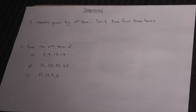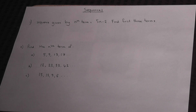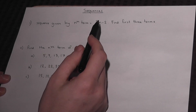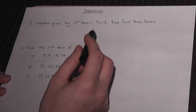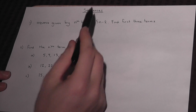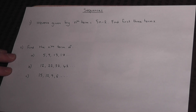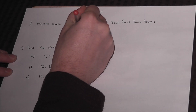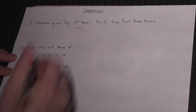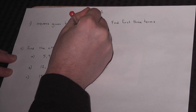This video summarizes the key things you must know for what are called linear sequences. Suppose you're given a formula for a sequence — in this case 5n minus 2 — and you're asked to find the first three terms. To find the first term we let n equal 1, for the second term n equals 2, and for the third term n equals 3.